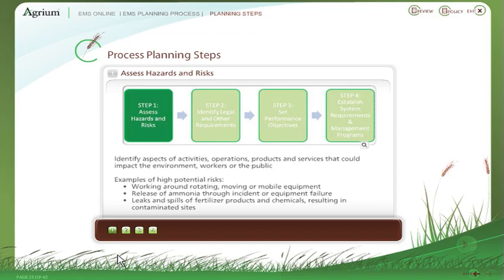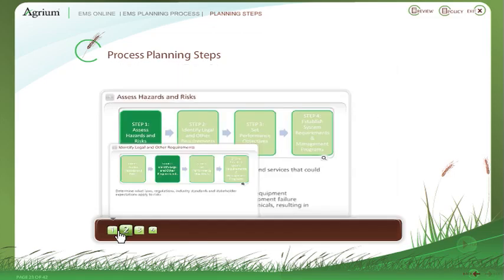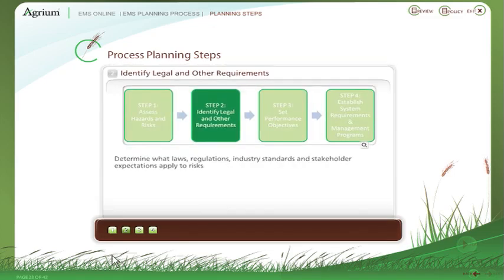Here are some examples of Agrium's high potential risks. Once we identify the risks, we determine what laws, regulations, industry standards and stakeholder expectations apply to those risks.